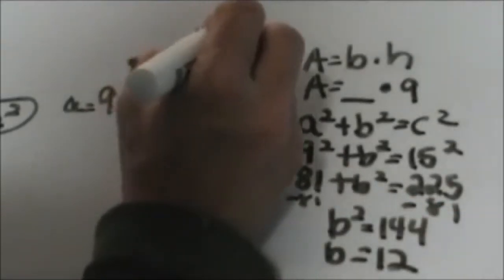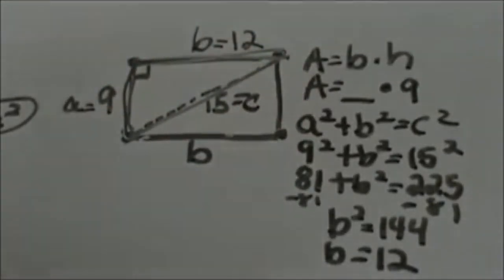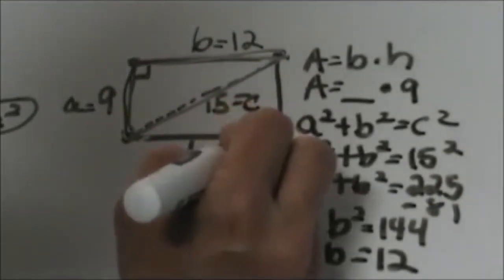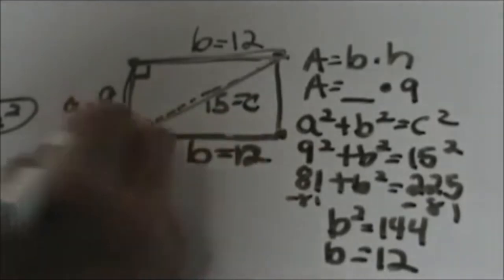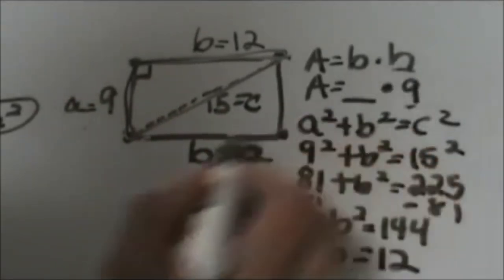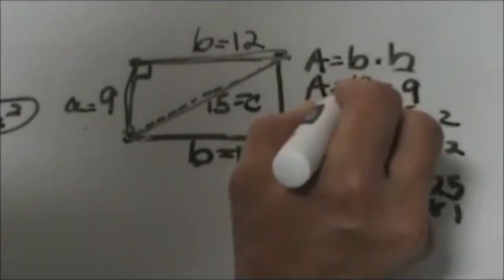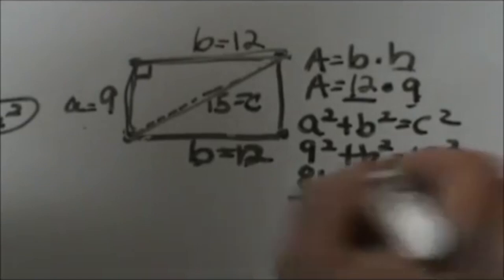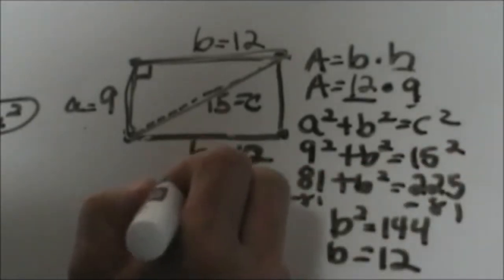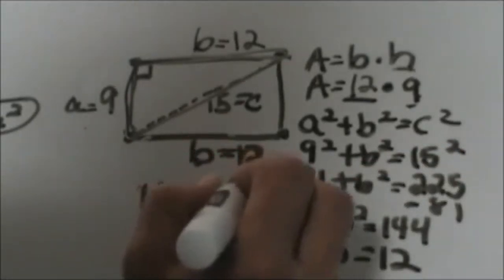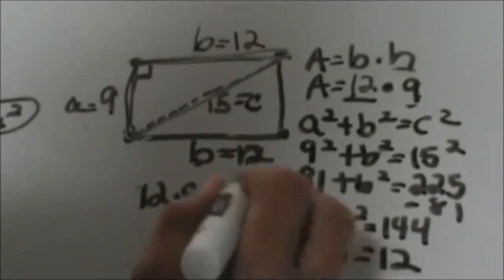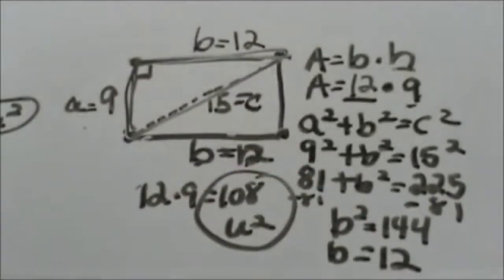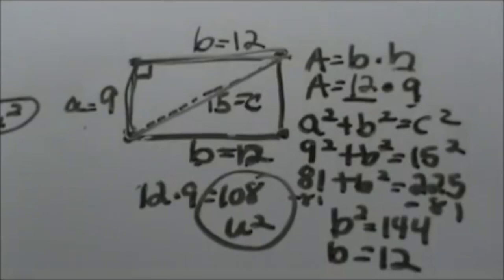So b is 12 so let's go back up here and label both our sides 12. Now we can plug in to our area formula. We now have our height of 9 and we now have our base of 12 so 12 times 9 is 108 and that would be units squared. And that is how you find the area of a rectangle given one side and the diagonal.